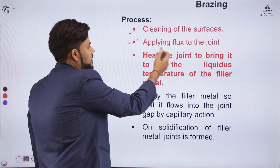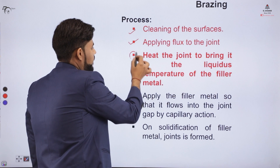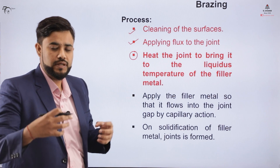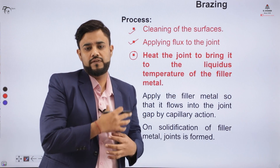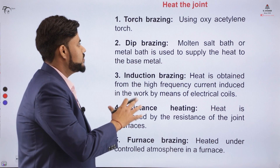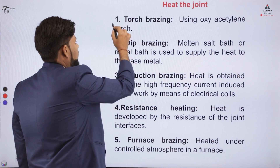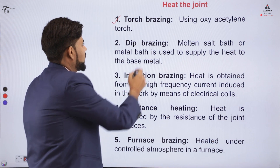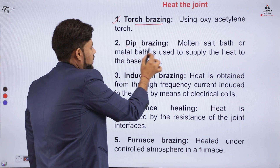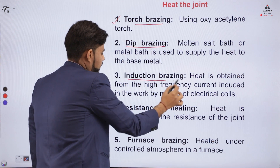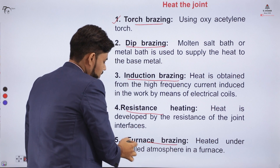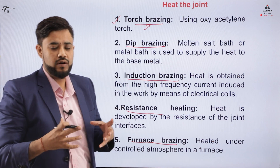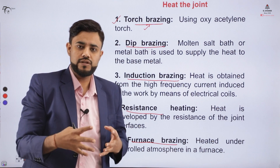The next step is to heat the joint so that when it comes in contact with the filler material, the filler flows into the gap. The major processes used to heat the joint are: torch brazing, dip brazing, induction brazing, resistance brazing, and furnace brazing. The most commonly used process is torch brazing.